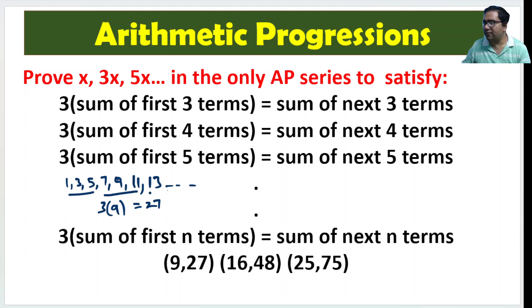Similarly sum of first 4 terms, 1 plus 3 plus 5 plus 7, which is equal to 16. 3 into 16 is equal to then 9 plus 11 plus 13 plus 15 which is equal to 48.